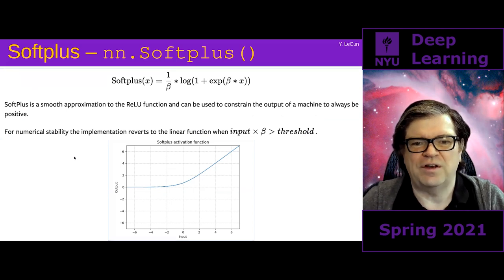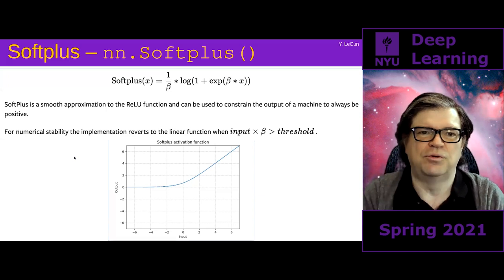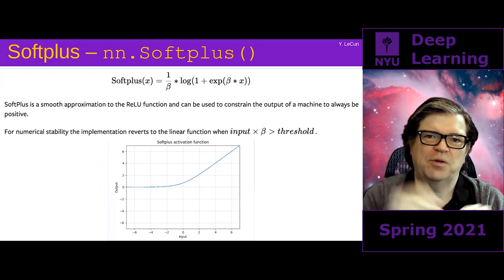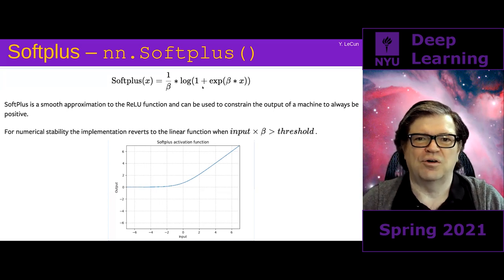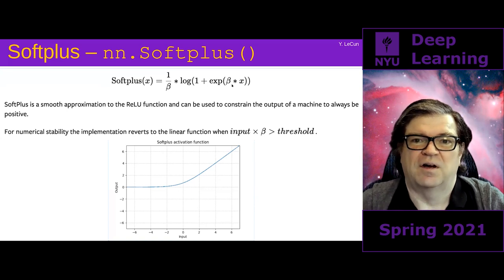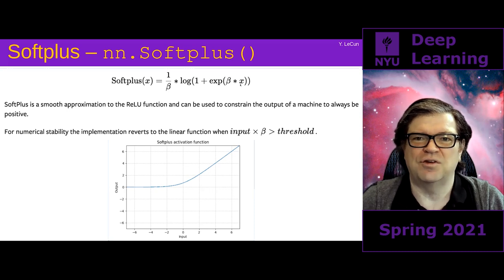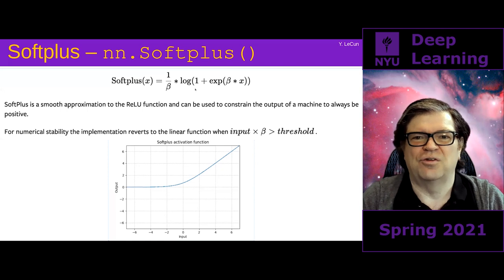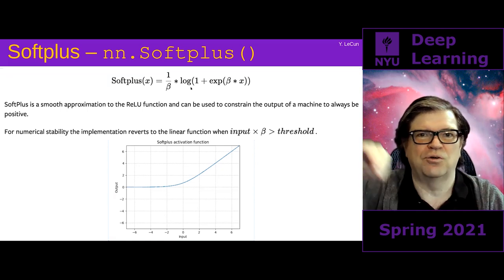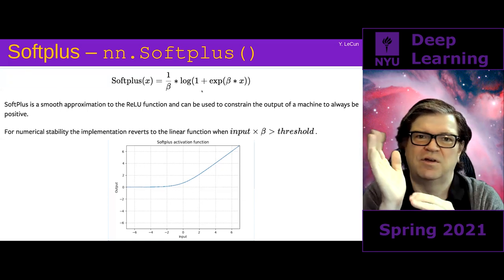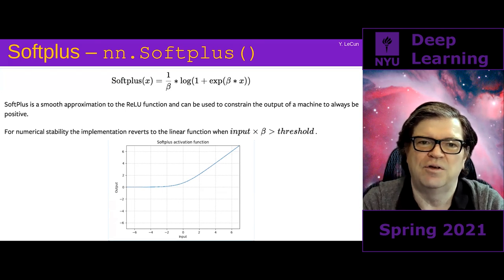SoftPlus is not contrast-equivariant, but you can think of it as a soft version of ReLU. The sharpness of the kink is determined by a parameter beta: log(1 + exp(beta·x)) / beta. When x is very large the exponential dominates and the log cancels it, giving the identity. When x is negative the exponential is close to zero, giving log(1) which is zero. So the function smoothly transitions between zero and the identity, with beta controlling the speed of transition.